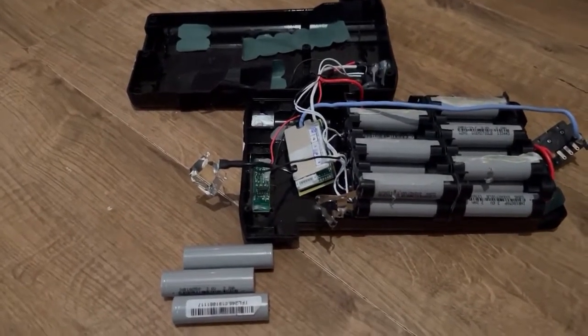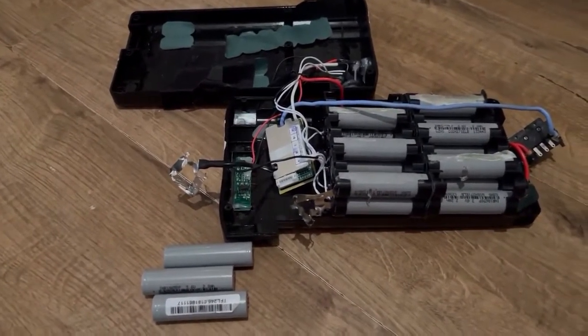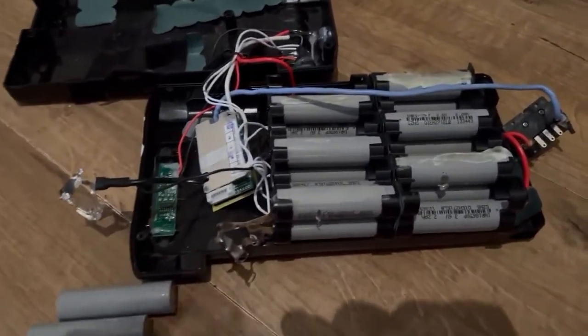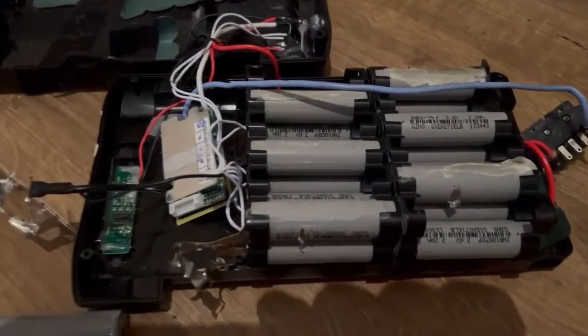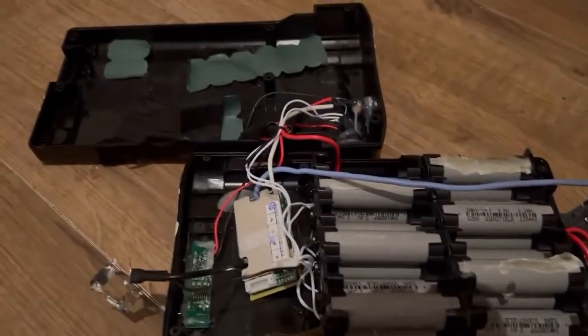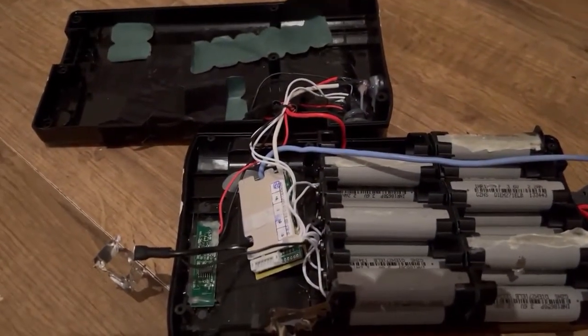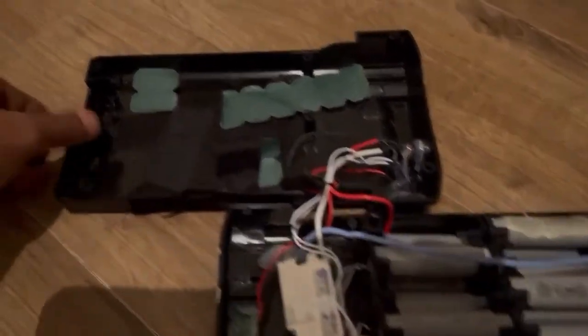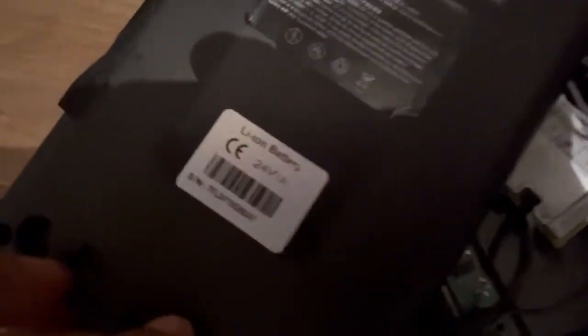Hello, welcome to my e-bike battery build and upgrade. In this build here we've got a 24 volt battery, it's a 7ah, not the best, but 24 volt 7ah as it says on the back there.